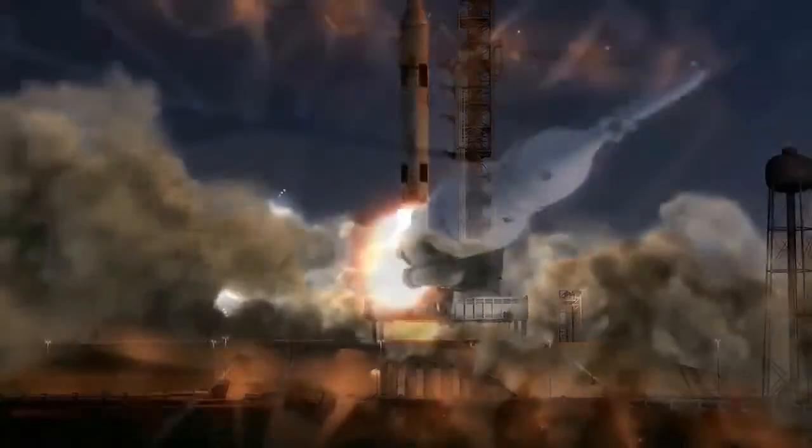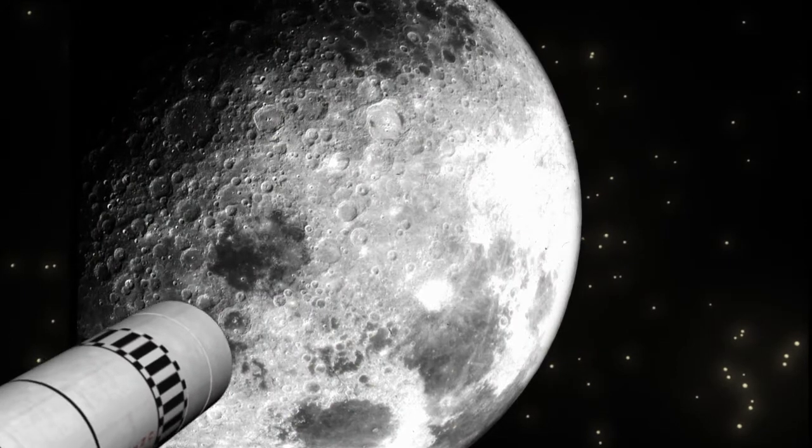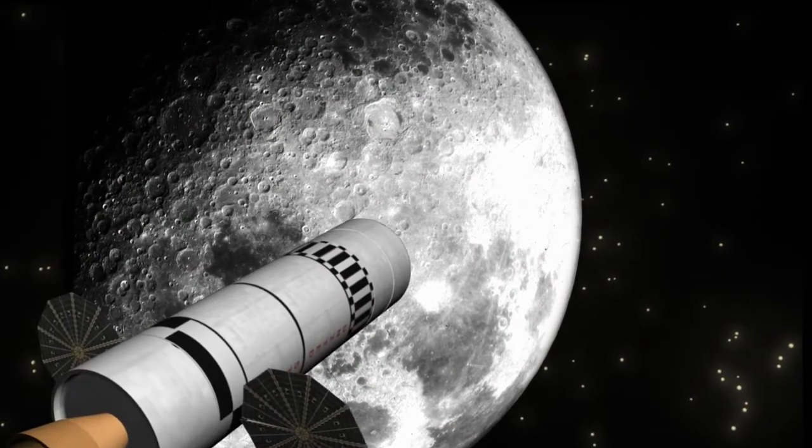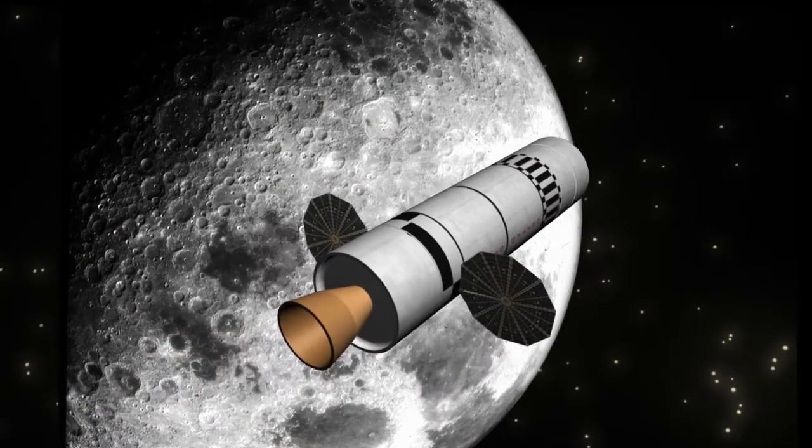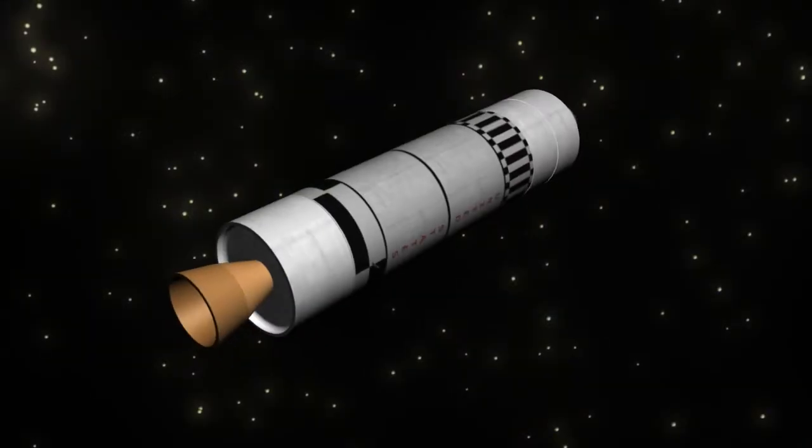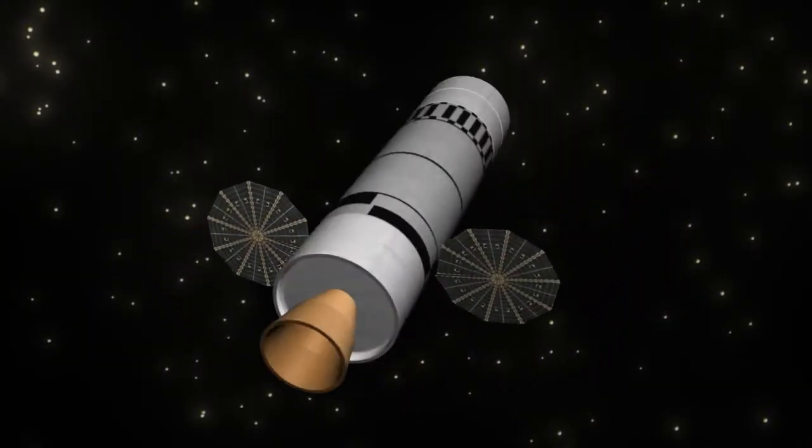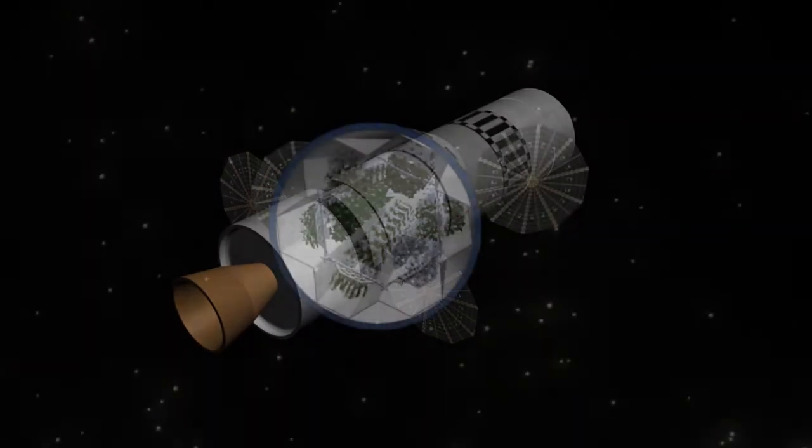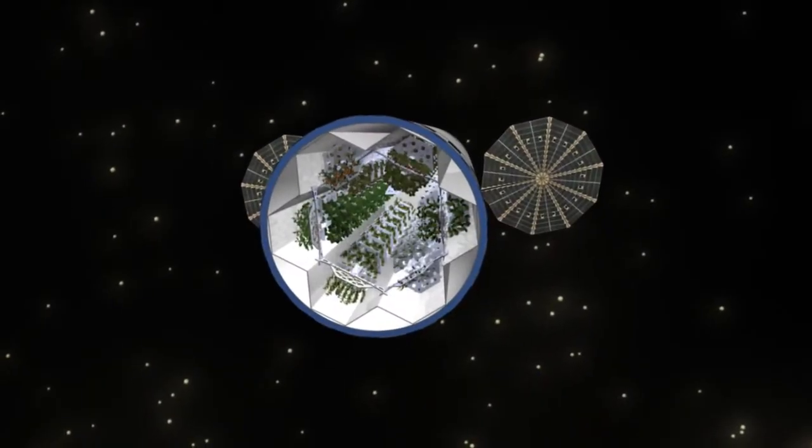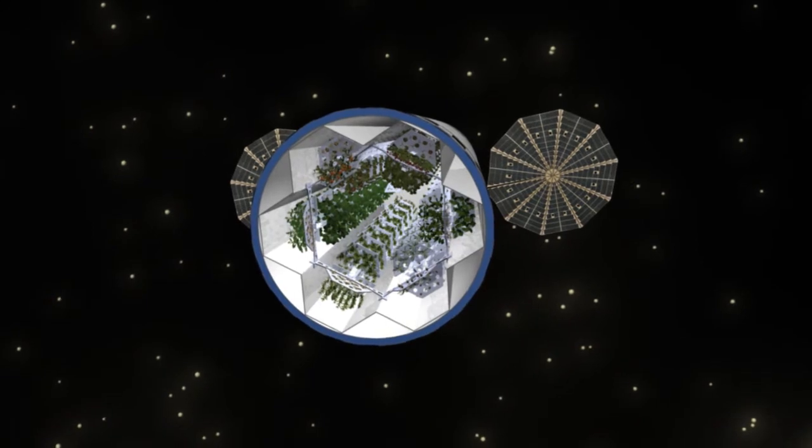Introducing the DIGS, the deployable independent greenhouse system, an automated greenhouse orbiting at EML2, providing a pit stop for future missions to NEOs, Mars, and beyond. The DIGS is an aeroponic space system capable of growing, harvesting, preserving, and storing fresh fruits and vegetables for later retrieval by crews on long-term missions.